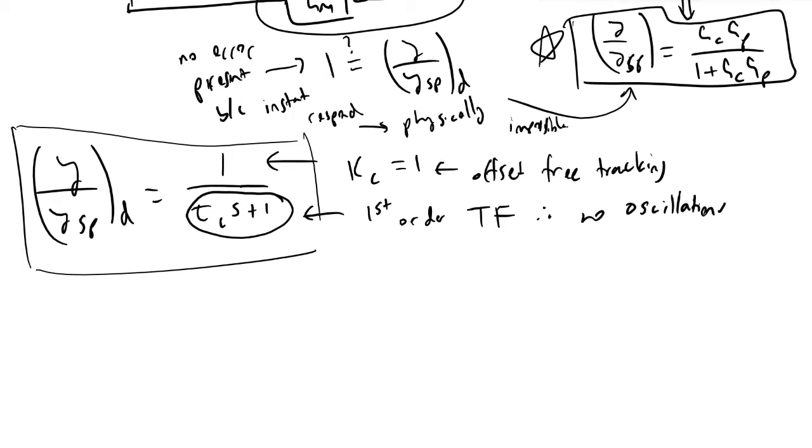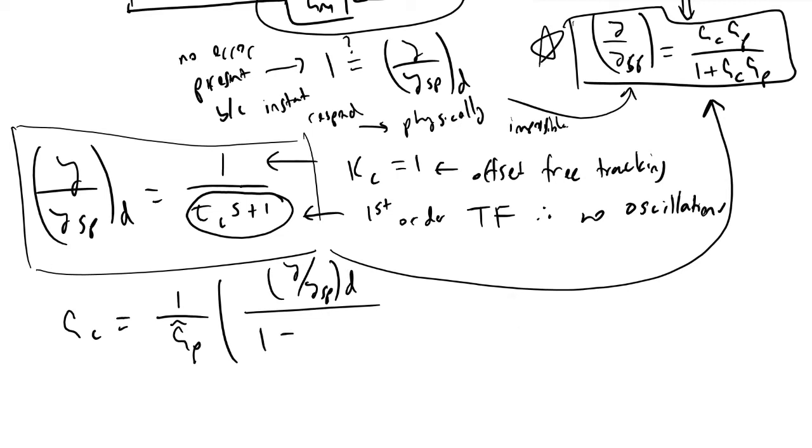And so what we'll do next is if we plug in and substitute all of these terms into this equation, we want to solve for GC because GC is what we're actually designing here. What we would see is that we'd have a term one over GP and this tilde denotes that it is the model GP. So there can be inaccuracies present and that is equivalent to the quantity y over ysp sub d divided by one minus y over ysp sub d.